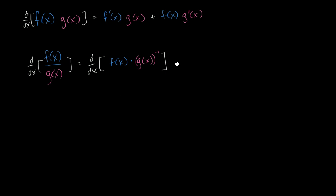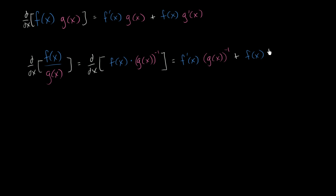What is this going to be equal to? Well, we just use the product rule. It's the derivative of the first function, f prime of x, times just the second function, which is g of x to the negative 1 power, plus the first function, f of x, times the derivative of the second function. Here we have to use a little bit of the chain rule. The derivative of something to the negative 1 power is negative 1 times that something — in this case g of x — to the negative 2 power, times the derivative of the inside, g prime of x. And there you have it — we've found the derivative using the product rule and the chain rule.